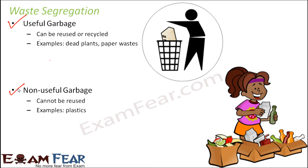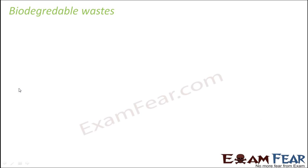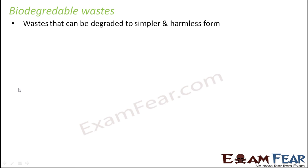Broadly, wastes can be classified into two types: biodegradable wastes and non-biodegradable wastes. Biodegradable wastes are those that can be degraded into a simpler, harmless form — they are naturally broken down, and that simpler form is also harmless to the environment. These are called biodegradable wastes.